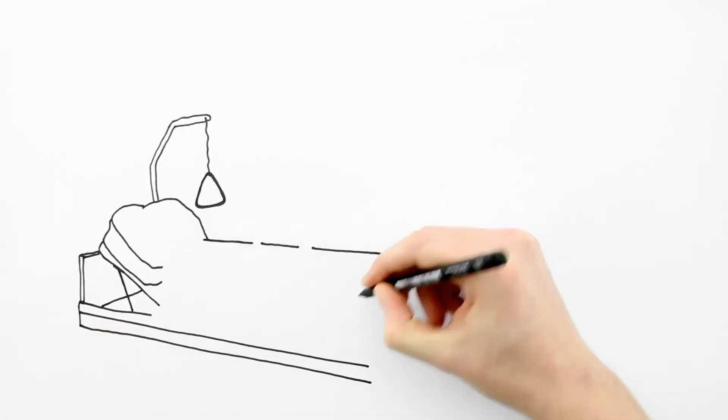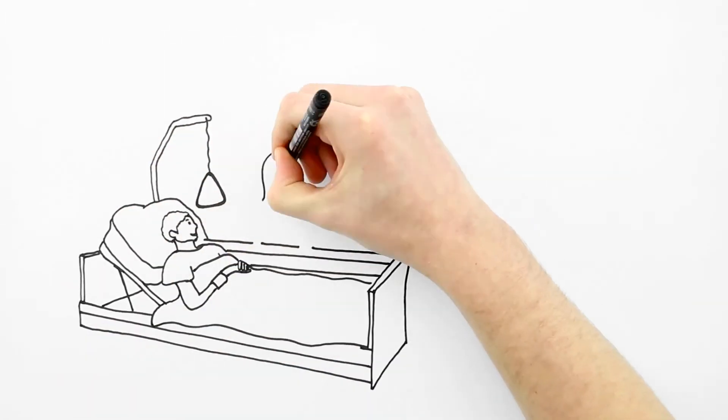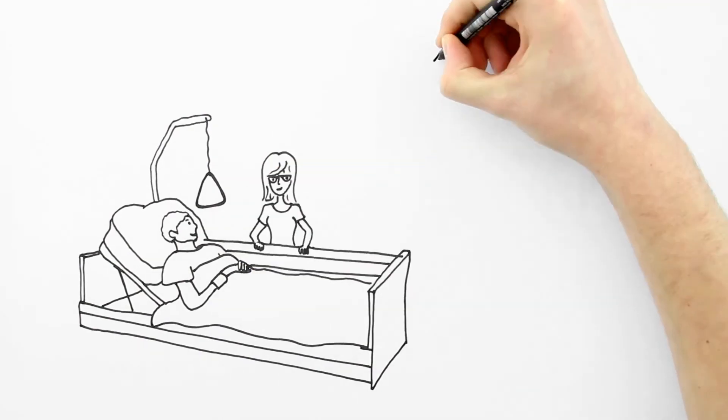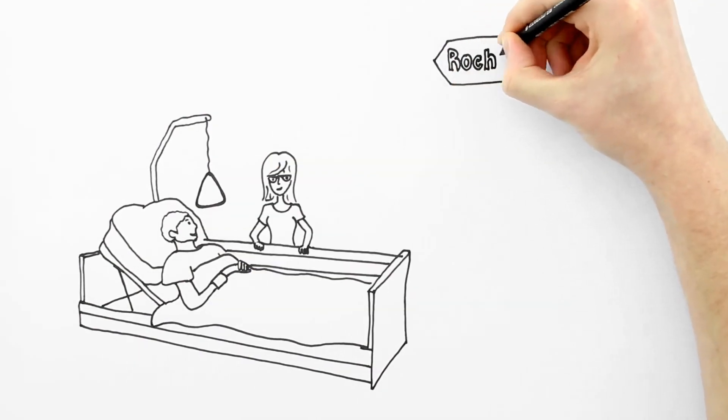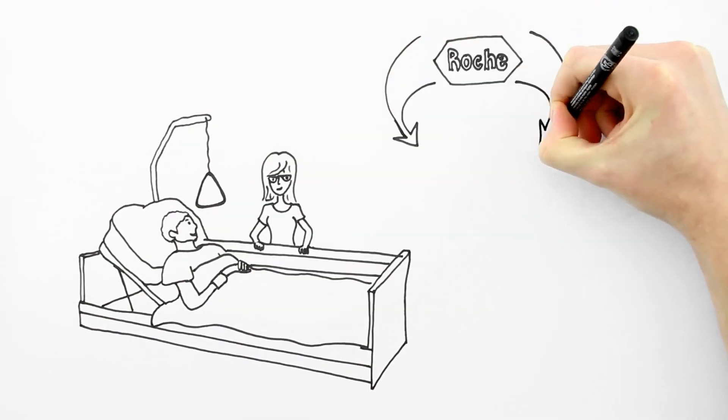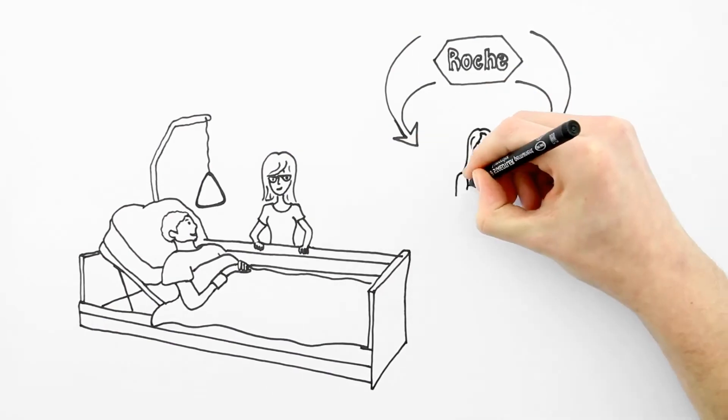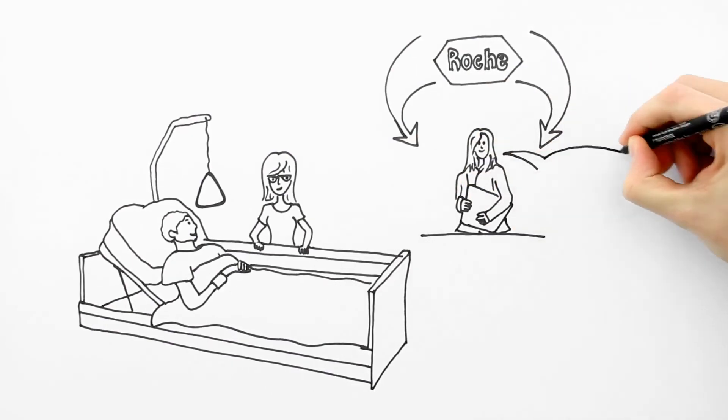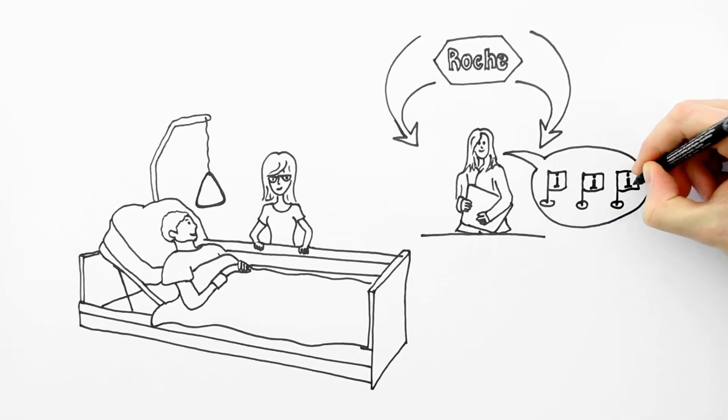For a number of months, Julia has had a family member in need of care who she cares for. She could count on Roche here as well, since through the free advice she received, she knew what she had to organize and which contact points were important for her.